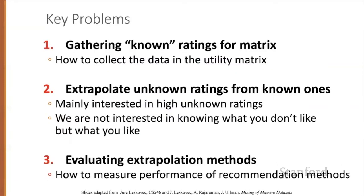In these lectures, we'll discuss three key problems in this space. First, we need to get the ratings. Second — the main problem for today — predicting unknown ratings. Note that we don't need to predict every blank entry in the utility matrix; we just need to find some entries in each row that are likely to be high. In other words, we don't care about un-recommending things the user might hate. And finally, we'll need some way to evaluate.